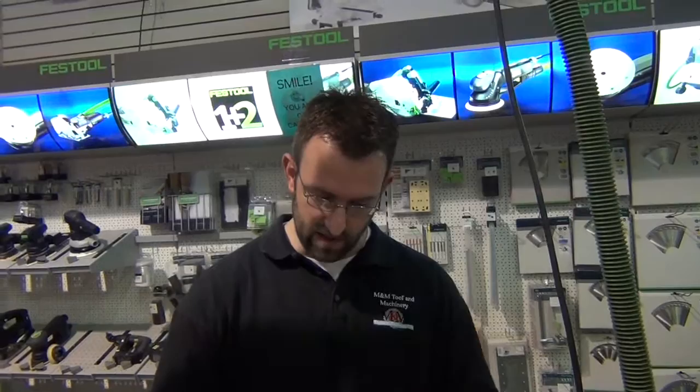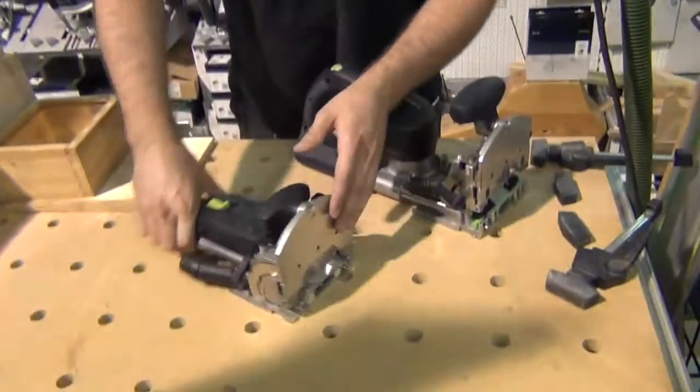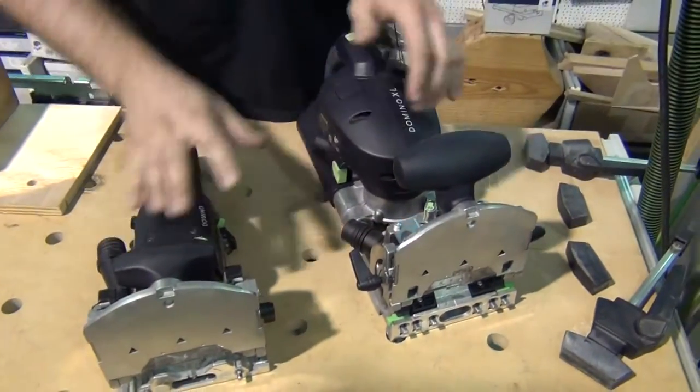I think it's the 500 model. So these are the two Festool Dominoes. We're not going to talk about the big one really, but just want to show you the kind of difference in size real quick. So the little, the smaller Domino, this is the 7, this is the 5.